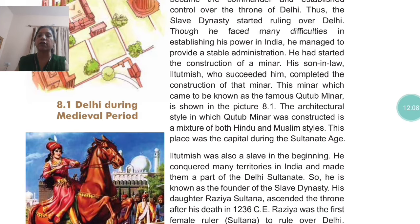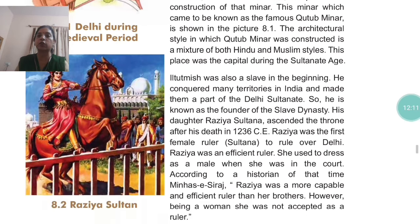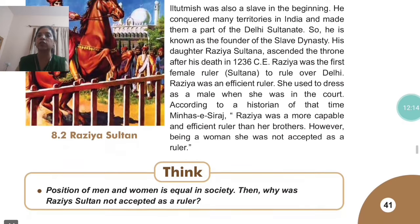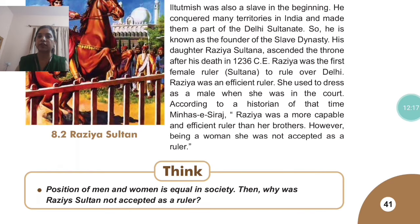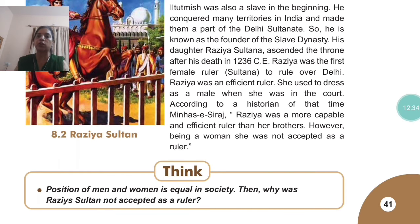His daughter, Razia Sultana, ascended the throne after his death in 1236 CE. Razia was the first female Sultana to rule over Delhi. After the death of Altomish, his daughter Razia Sultana ruled over Delhi. Razia was an efficient ruler. She used to dress as a male when she was in the court. According to the historian Minhaj-i-Siraj, Razia was a more capable and efficient ruler than her brothers.